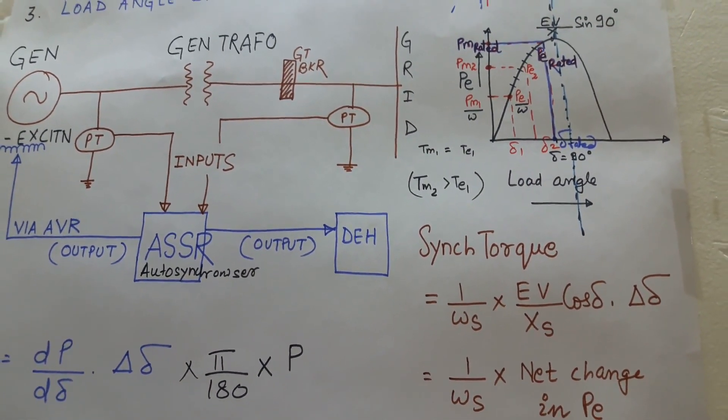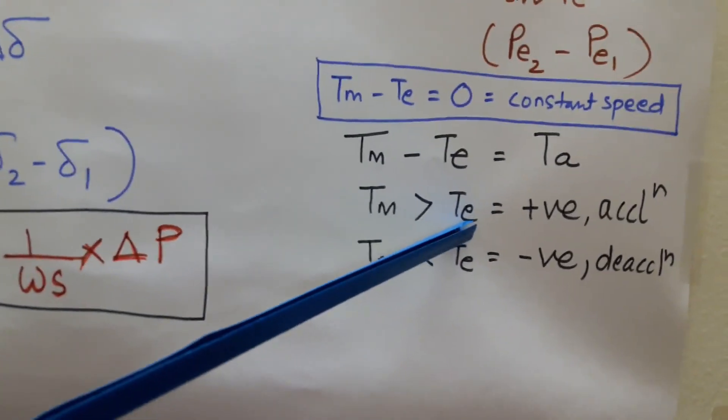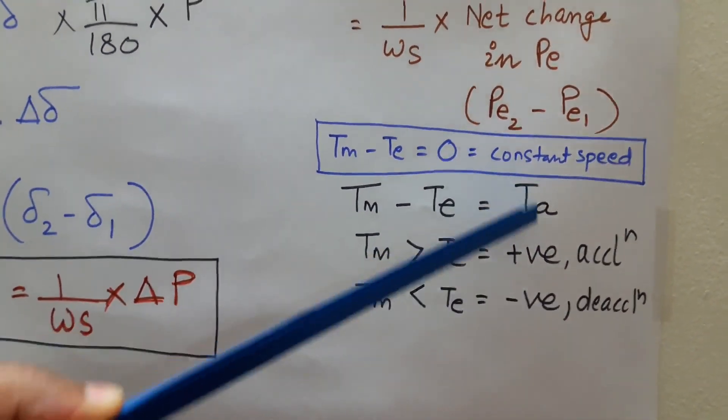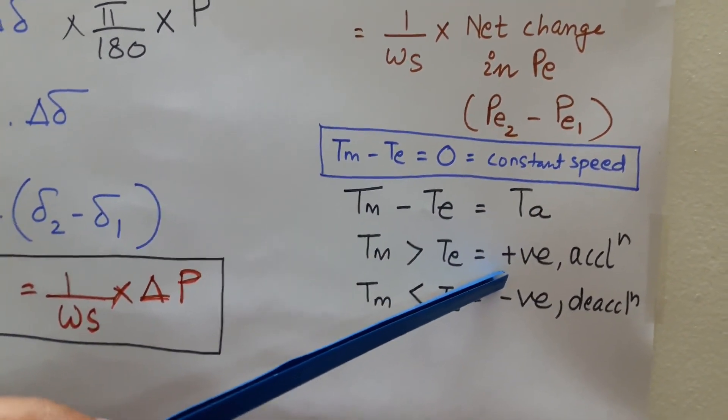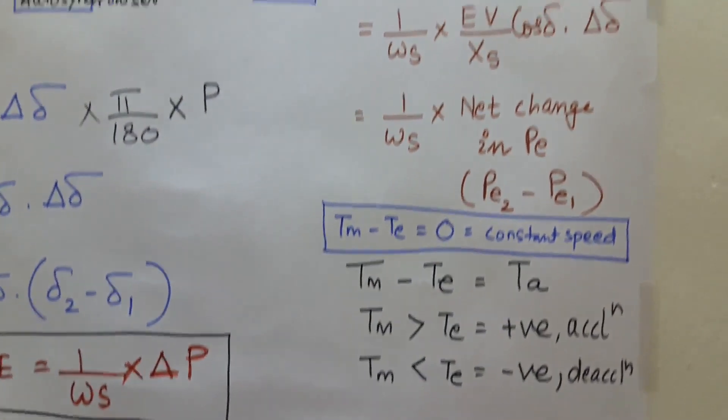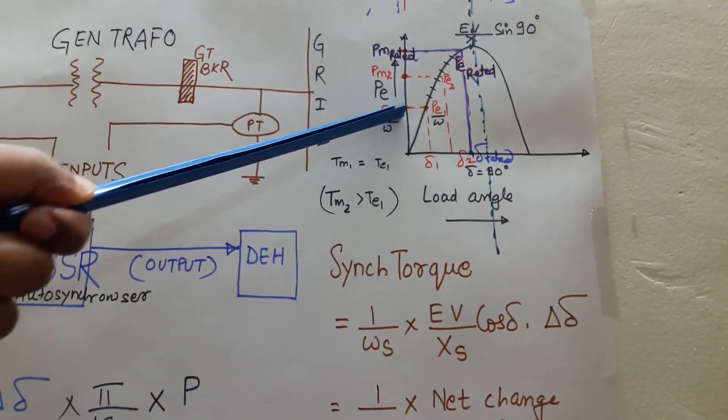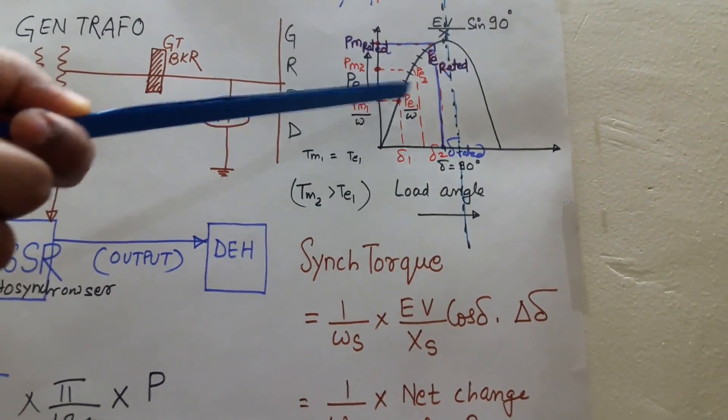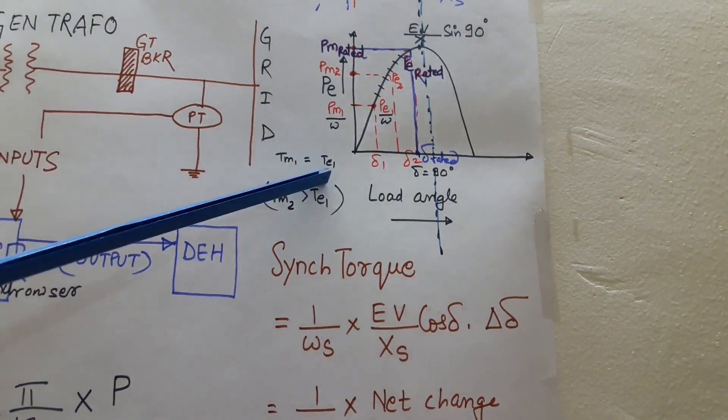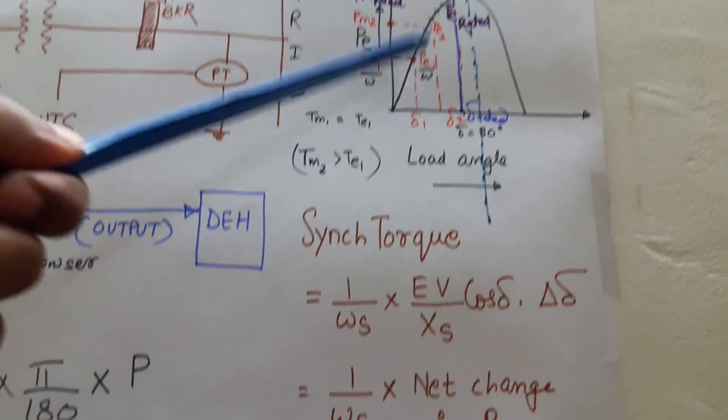For acceleration, the condition is that the TM should be greater than TE. If this TM becomes greater than TE, the acceleration torque will become positive and there will be acceleration in the rotor. So at this point, TM1 and TE1 both are equal. You can see I have drawn a line. This is PM1, this is PE1. So the TM1 obtained and the TE1 obtained both are equal. So there is no acceleration. It is a steady state condition.